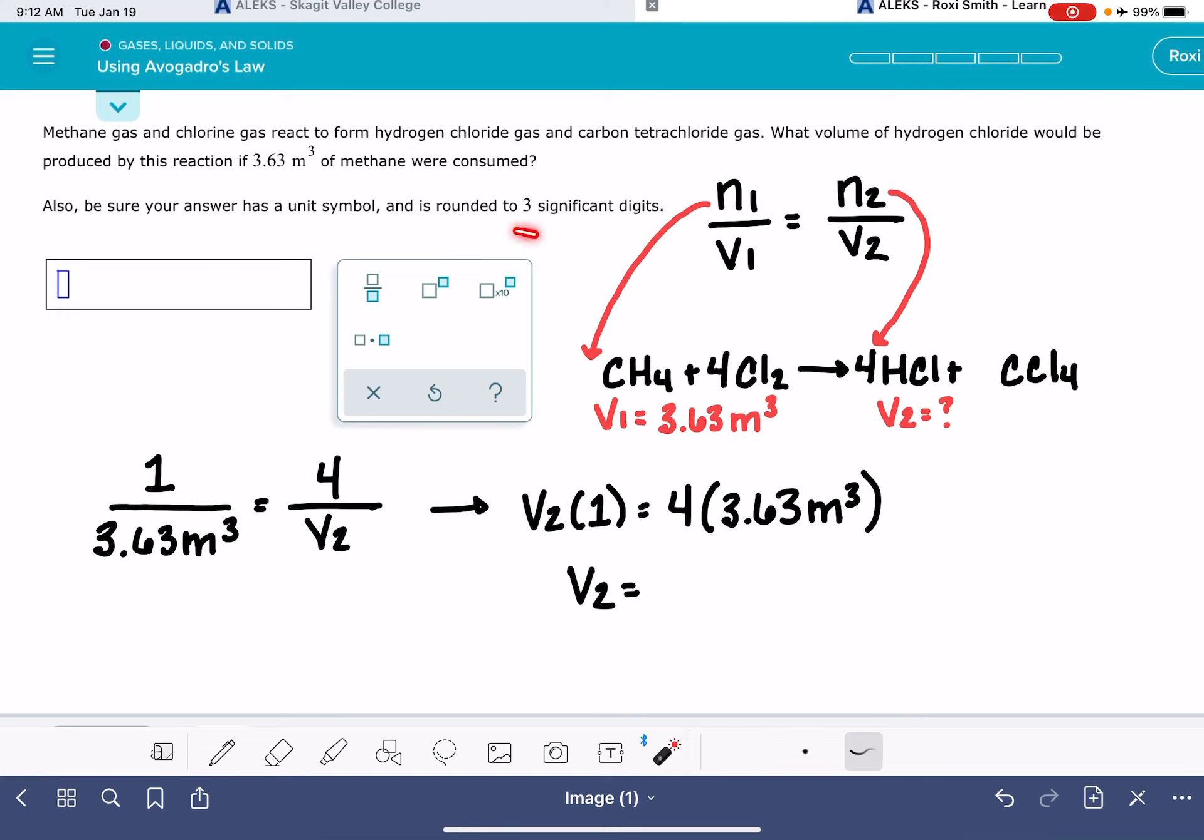ALEKS wants this to three significant figures. So that's going to be 14.5. And don't forget the unit. It's telling you this is another one of those problems where you have to enter the unit in yourself. Make sure that it has a unit symbol. 14.5 cubic meters.